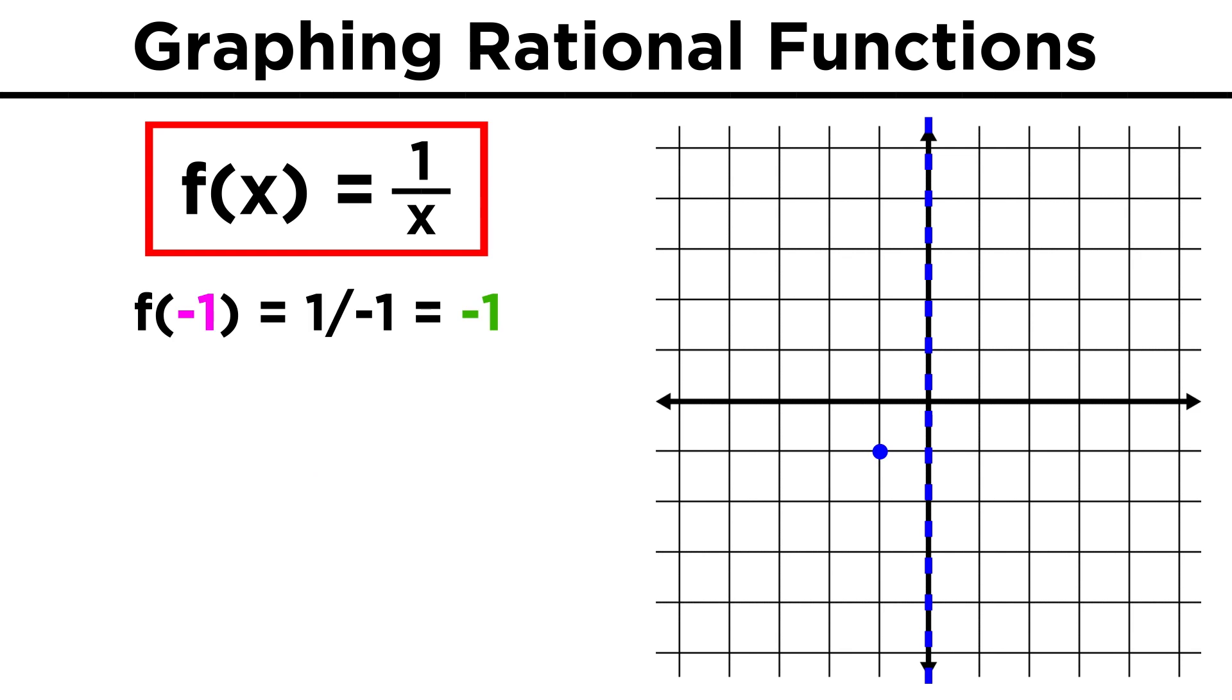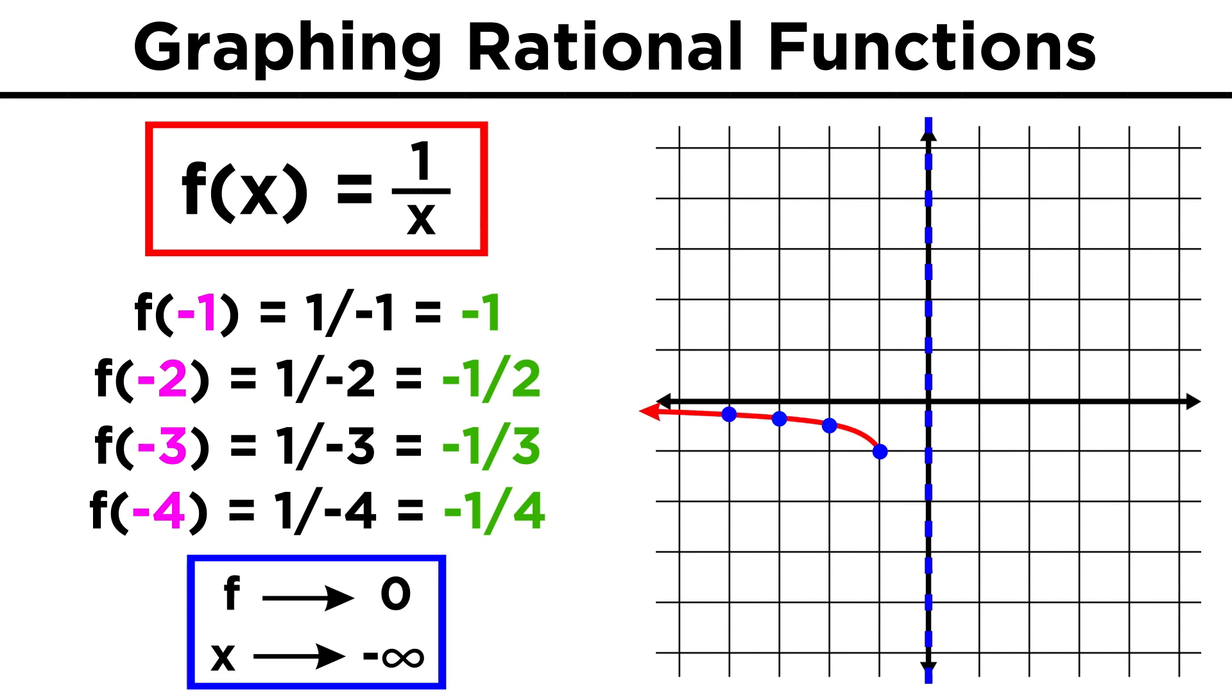Negative one gives us negative one, so negative one, negative one is part of the function. As we go left, we get closer and closer to zero from the negative direction, with the limit of reaching zero as x approaches negative infinity, so the function approaches zero but never quite gets there when we go left.